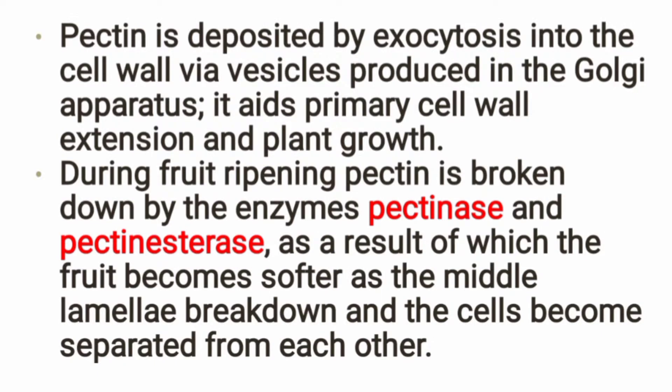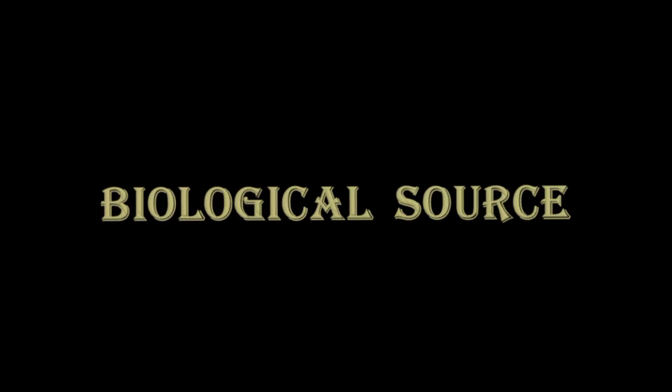How does Pectin deposit in the primary cell wall? It deposits through the exocytosis process — it is produced in the Golgi apparatus. In this way, Pectin supports primary cell wall extension and plant growth. When a fruit ripens, Pectin breaks down by enzymes Pectinase and Pectinesterase, making the fruit very soft. That is the role of Pectin in fruits.